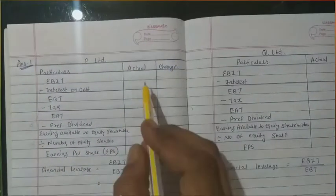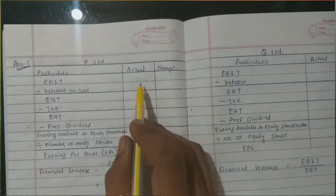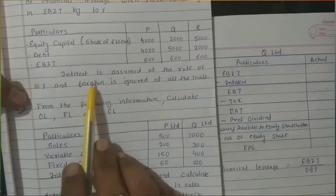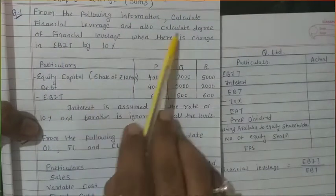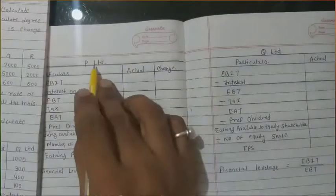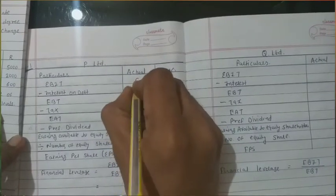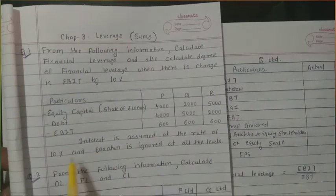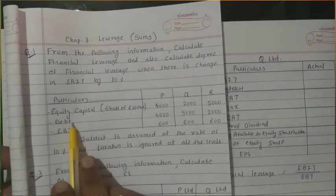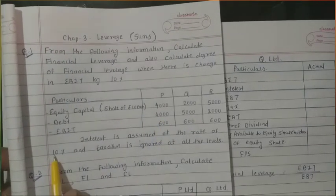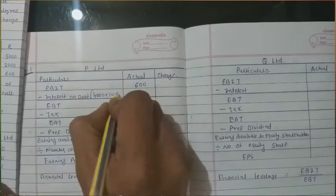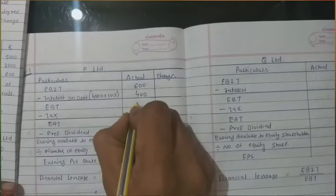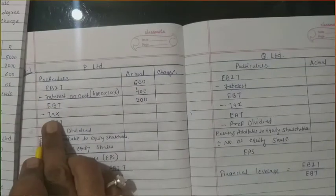First, we calculate the actual figures. Here actual is given, so we calculate first, then the change. EBIT of P Limited is 600. Interest on debenture — interest is always 10%, calculated on debenture. Debenture is 4000, so 4000 × 10% = 400. Therefore earning before tax = 600 − 400 = 200. Tax rate is ignored, so earning after tax = 200.